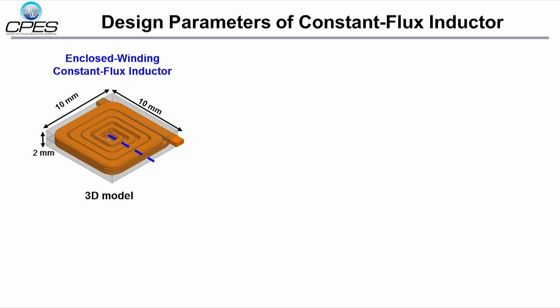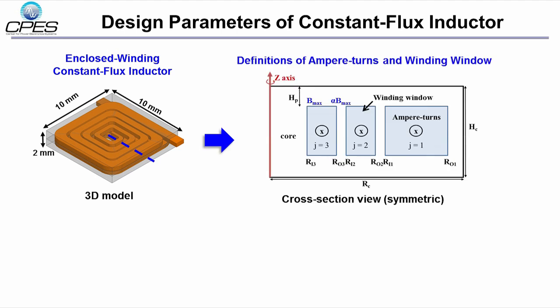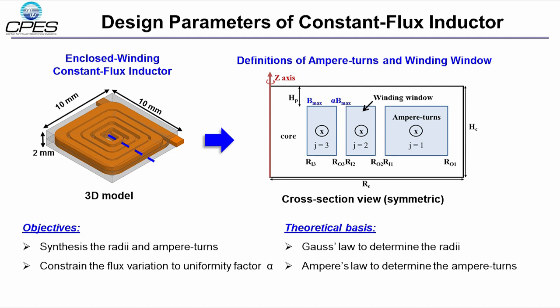If we take a look at the cross-section view of the inductor, the winding inside the core are grouped into several winding windows that carry a certain amount of ampere-turns. The objective of the constant flux inductor design is to determine the radii and the ampere-turns of each winding window so that the flux is controlled to drop from a maximum value B_max to a minimum value alpha B_max, where alpha is the uniformity factor. The higher alpha gives more uniform flux distribution.